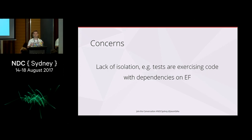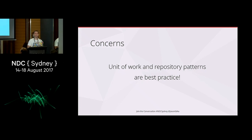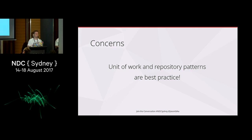The next concern is lack of isolation — you're exercising code that has dependencies on Entity Framework Core, and that's true. But I'm also exercising code that has dependencies on .NET Core, and I'm okay with that. I trust .NET Core and I trust Entity Framework Core. Finally, the unit of work and repository patterns are best practice — they are, but Entity Framework for some time has implemented both of those patterns: the DB context is a unit of work and the DB set is a repository. If you are building a big enterprise system and want clean separation of concerns, it is a good idea to implement those patterns — but you can still use in-memory behind them. Instead of mocking your unit of works and repositories, just new them up with a context in the same way as shown here today.